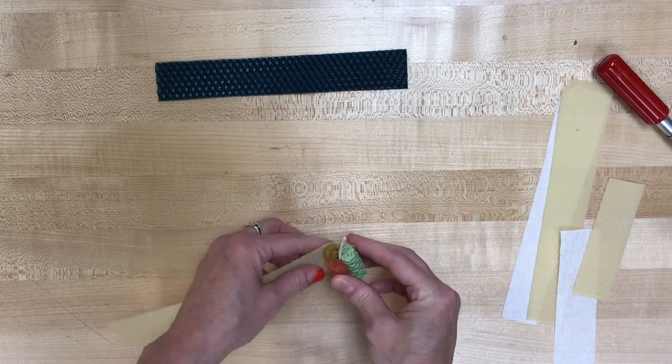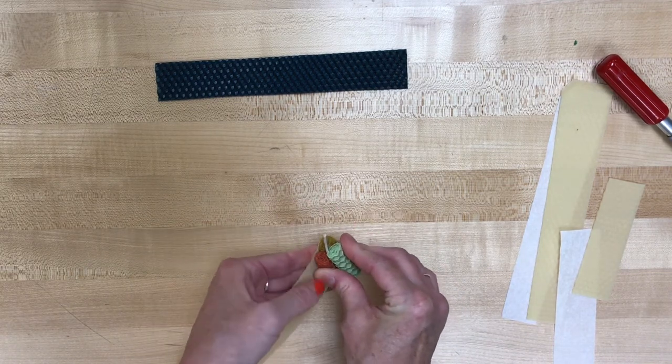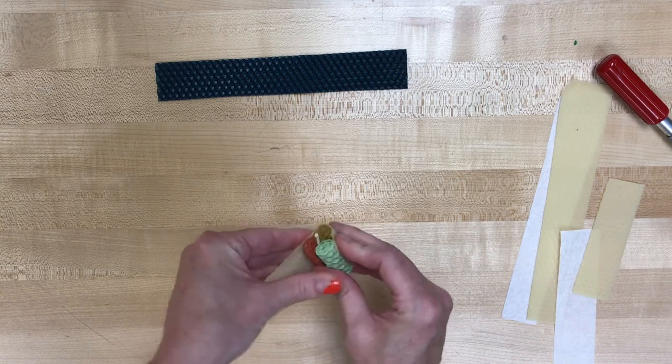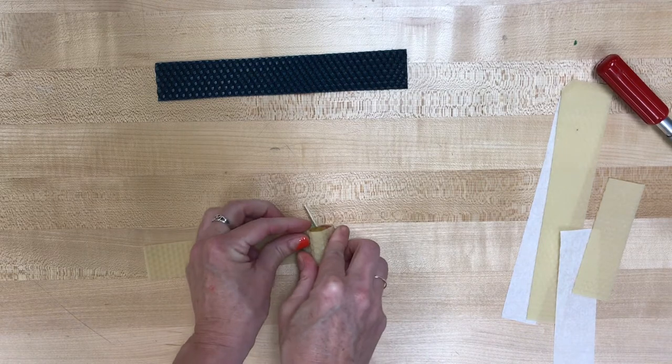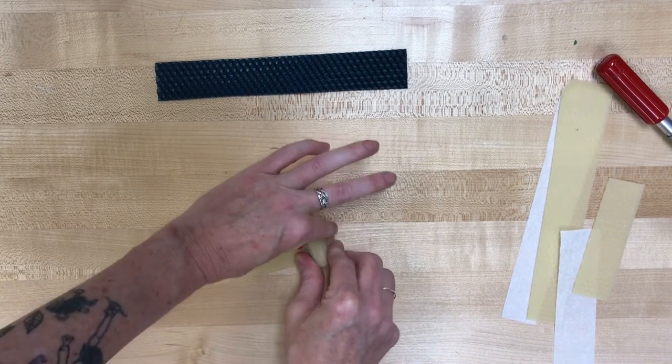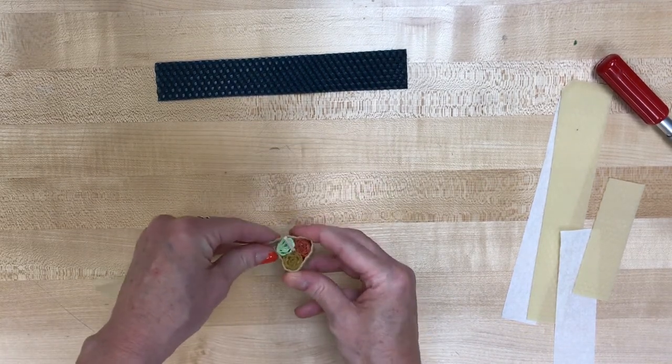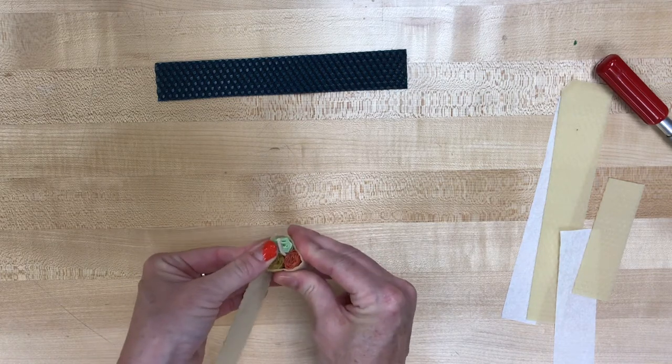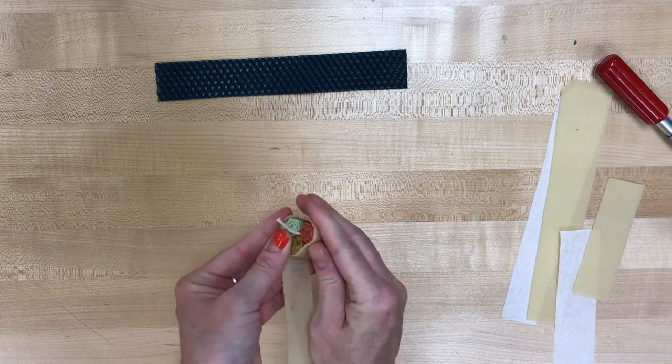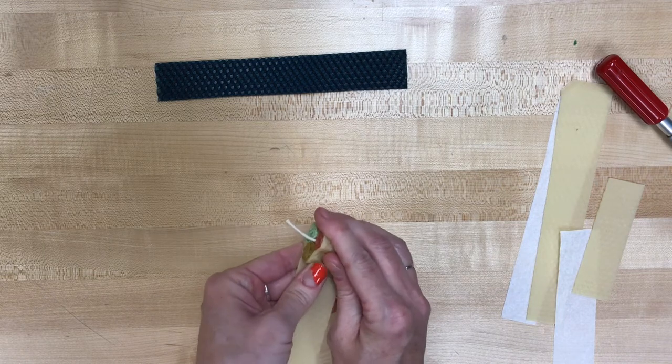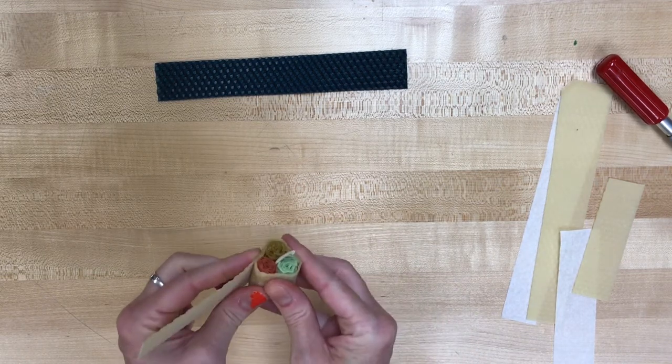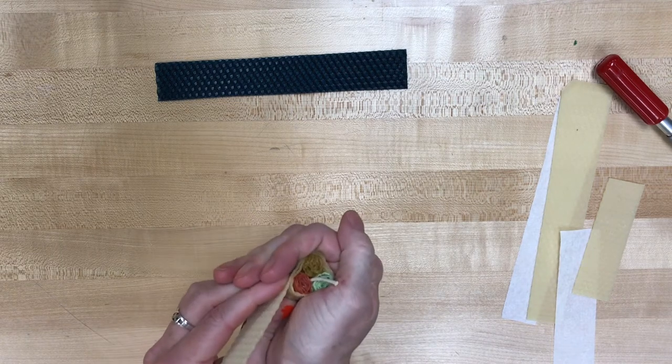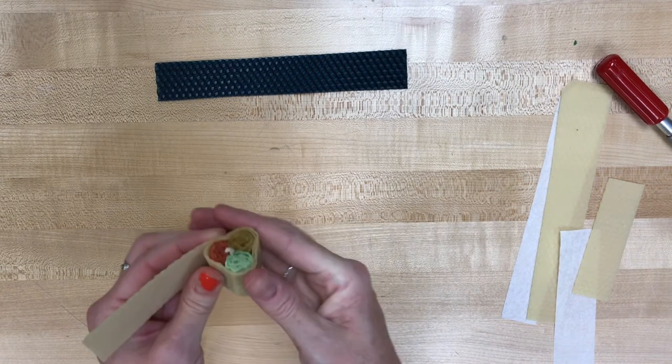Make sure all those edges are even, then you can start to roll that around as well. Just go slow. Your hands are naturally warm, so that's going to help the beeswax start to take on a different shape and adhere to the other beeswax around it. Again, you want to make sure you're keeping those edges even. Keep your sushi roll nice and neat.